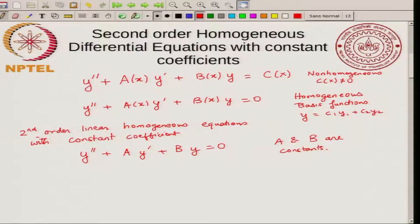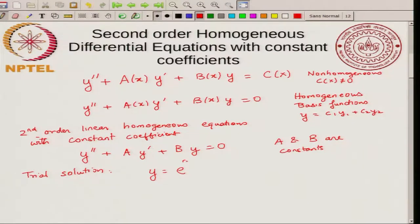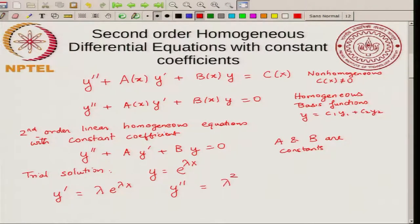How do you solve such a differential equation? You can convert it into two first order differential equations and use matrix methods. Alternatively, you can directly use trial solutions. We try a solution y equal to e raised to λx. I did not put a constant before this because since it is a homogeneous equation, I can always multiply by a constant and get another solution. So y prime equals λ times e to the λx and y double prime equals λ squared e to the λx.